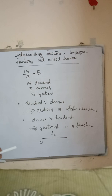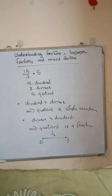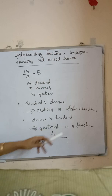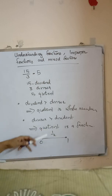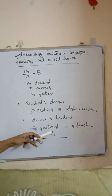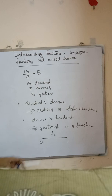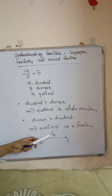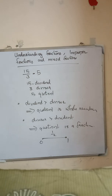In another case, when the divisor is greater than the dividend, the quotient is a fraction. For example, 1 by 2 is a fraction. Here the dividend is 1 and the divisor is 2, so the dividend is less than the divisor, making it a fraction.